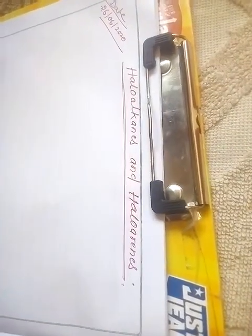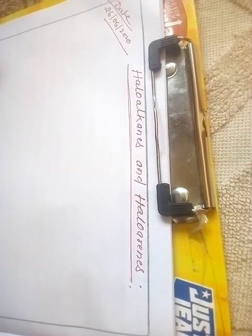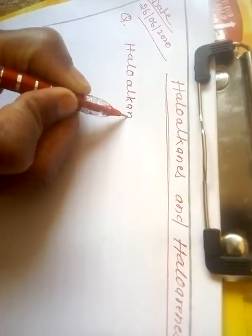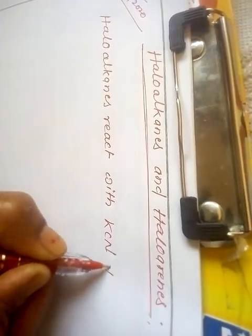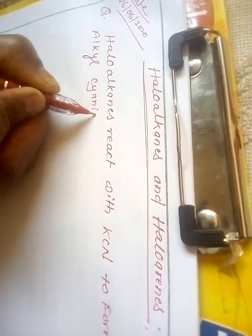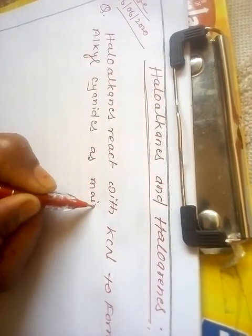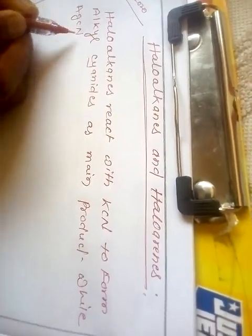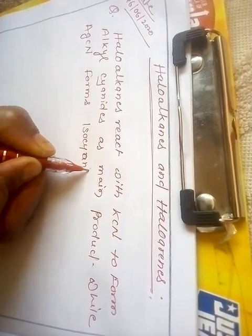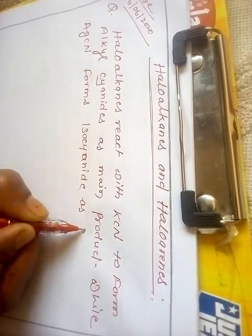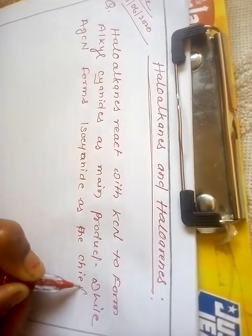I am going to discuss halo alkenes and halo arenes. Halo alkenes react with KCN to form alkyl cyanide, while AgCN forms isocyanide as the chief product.